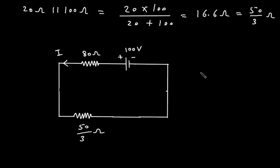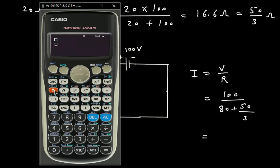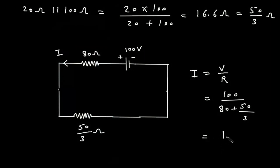From here we can find the value of total current I. I is equal to V by R. The value of voltage is 100 volts divided by resistance, which is 80 plus 50 by 3. So this will be 100 divided by 80 plus 50 by 3, which gives 1.03 ampere.